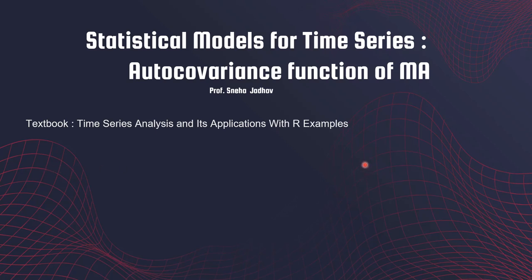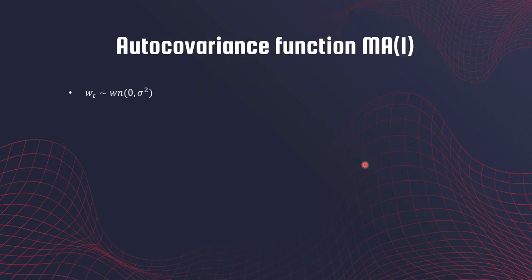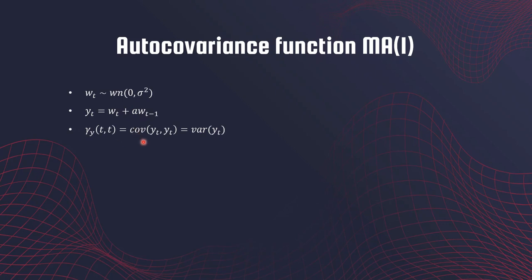Hey everyone, welcome back. In this video we shall see how to calculate the autocovariance function of a moving average process. This is white noise, and this is the moving average process of order one. Let's start by looking at the autocovariance function at times t and t — gamma_y(t,t) — which is basically the covariance of y_t and y_t, which is the variance of y_t. You can plug in the formula or expression for y_t.